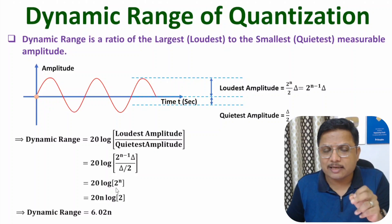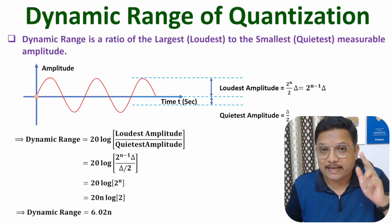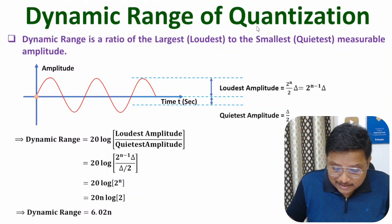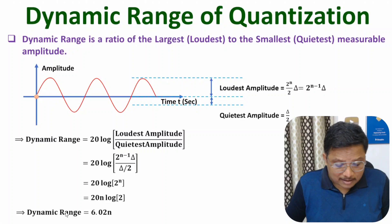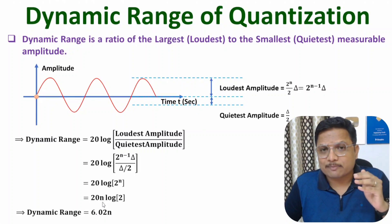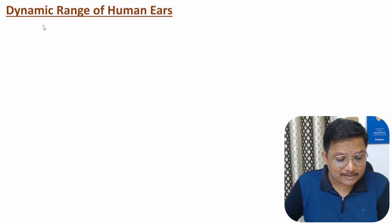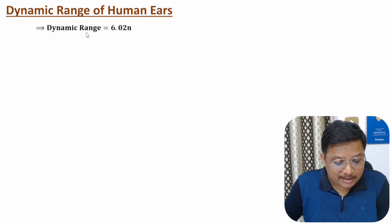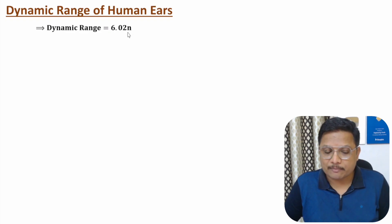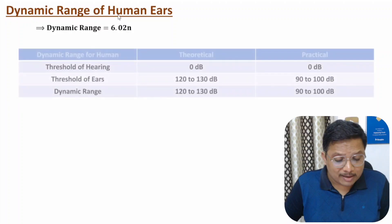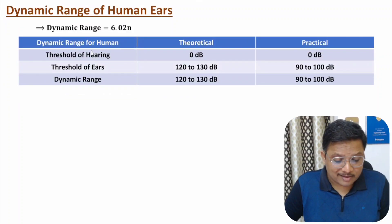So practically, dynamic range can be measured based on the number of bits per sample. Based on quantization, dynamic range is defined as 6.02 × n dB. Now let me explain why dynamic range is so essential. For that, I'll consider the case of human ears. The basic formula is 6.02 × n, calculated in dB.